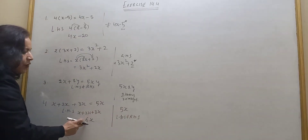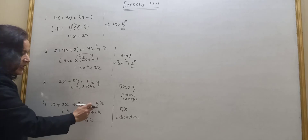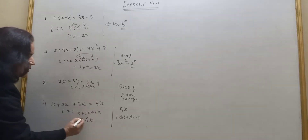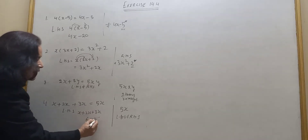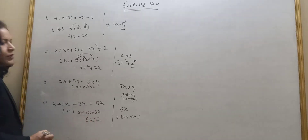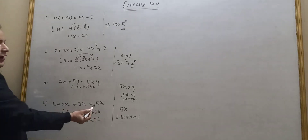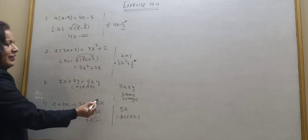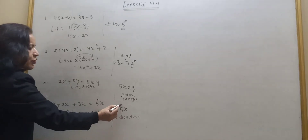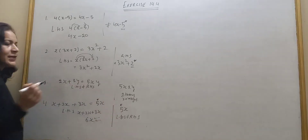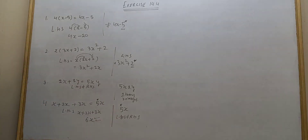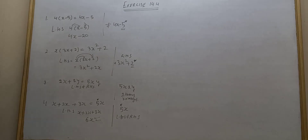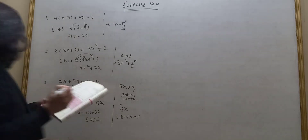The error is 5x — it should be 6x. This is the correct statement. So the error is here: it should not be 5, it should be 6x. This is the error.